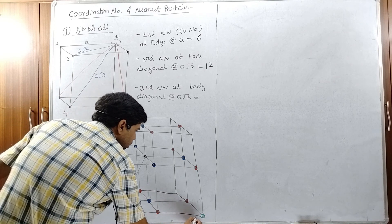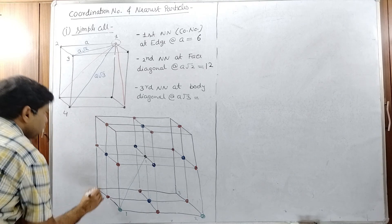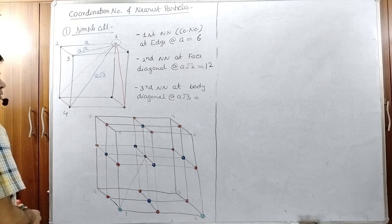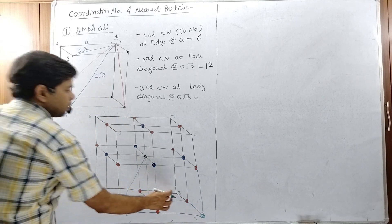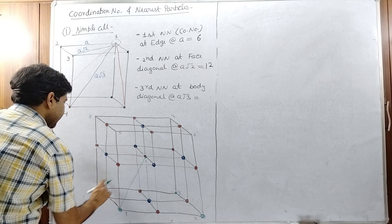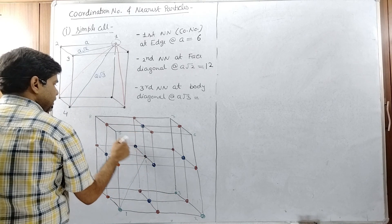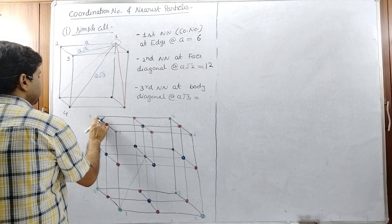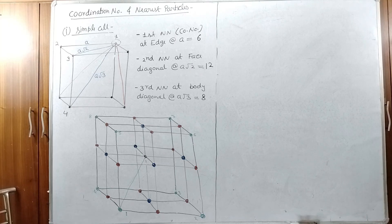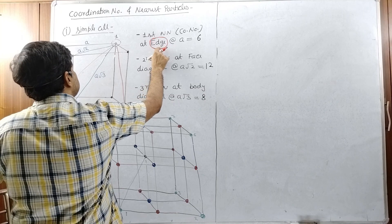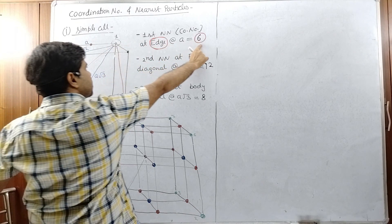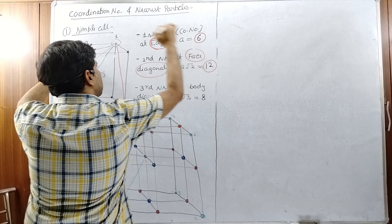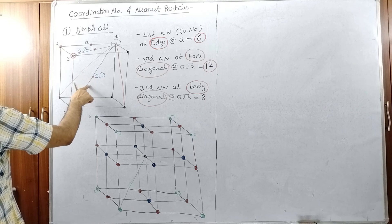We have eight boxes, and each box contributes one body diagonal. Box number one through box number eight each provide one body diagonal endpoint, giving eight third nearest neighbors in total. So the third nearest neighbor count is eight. To summarize: any particle at an edge corner or edge center has 6 neighbors; any particle at the face diagonal or face center has 12 neighbors; and any particle at the body diagonal or body center has 8 neighbors.